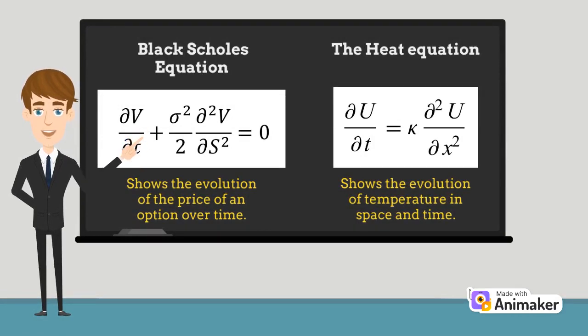The Black Scholes equation models the evolution of the price of an option over time, whereas the heat equation models the evolution of temperature distribution over time, more specifically, the diffusion of heat in both time and space.